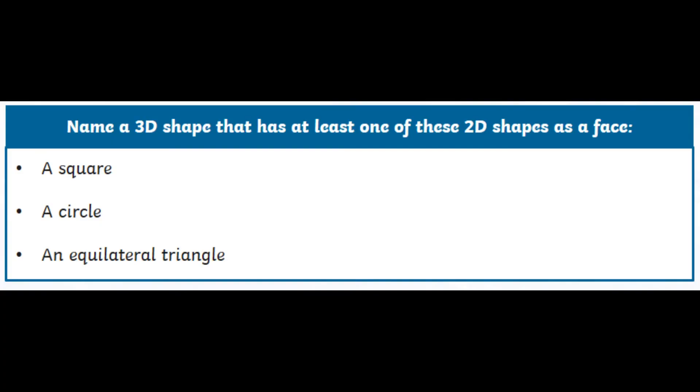Okay, so we're going to have a look at a few problems and puzzles using this vocabulary today. So we'll start off with this one. Can you name a 3D shape that has at least one of these 2D shapes as a face? So can you think of a three-dimensional shape that has a square face, one that has a circle face, and one that has an equilateral triangle face? Have a go at it independently. If you're not sure, go back to the poster. Write down what you think, pause the video, and see if you agree with the options that I have come up with.